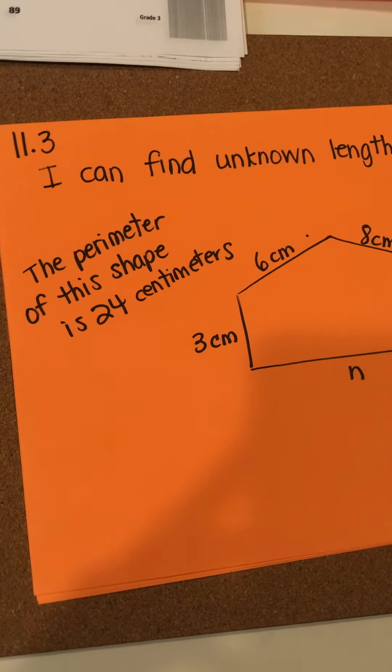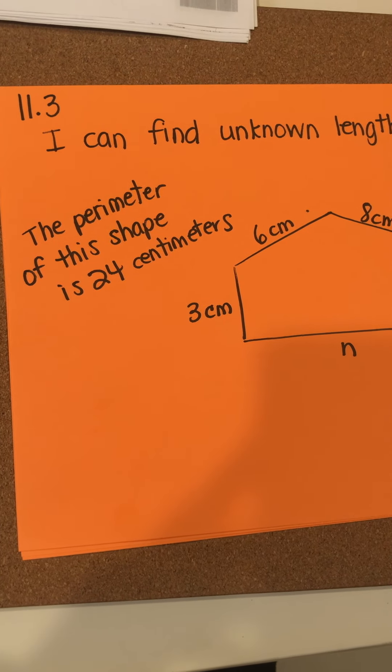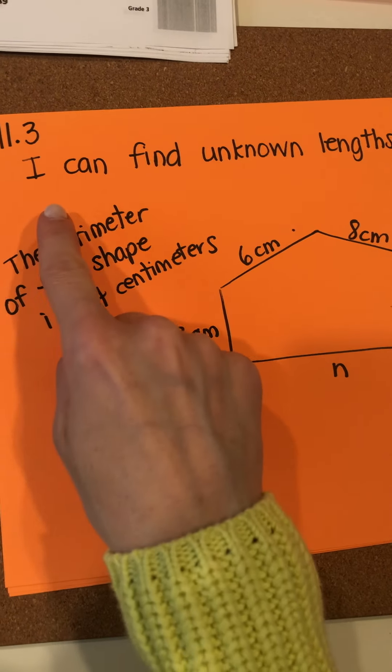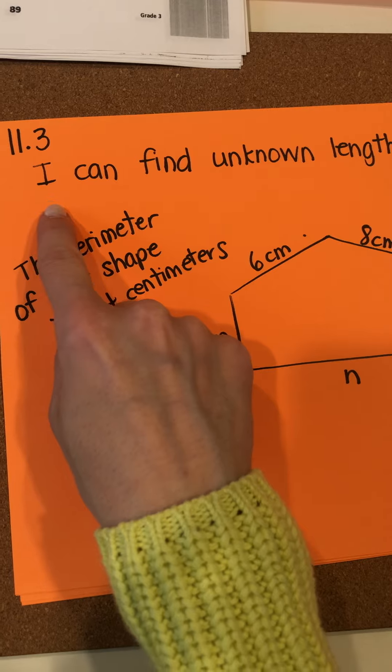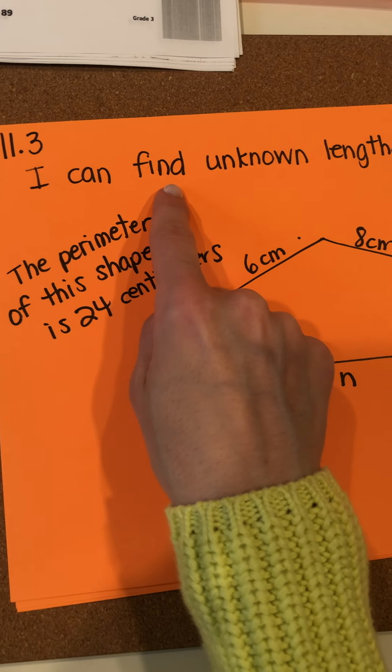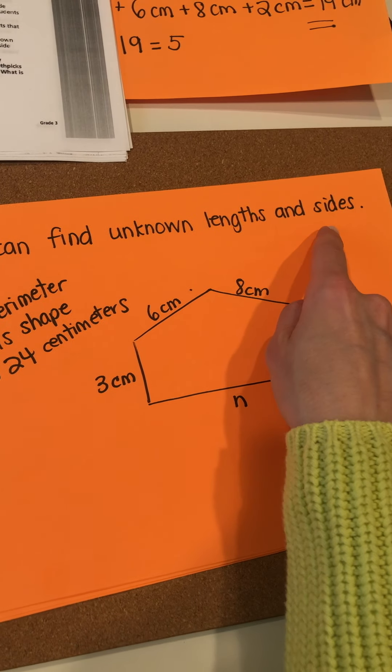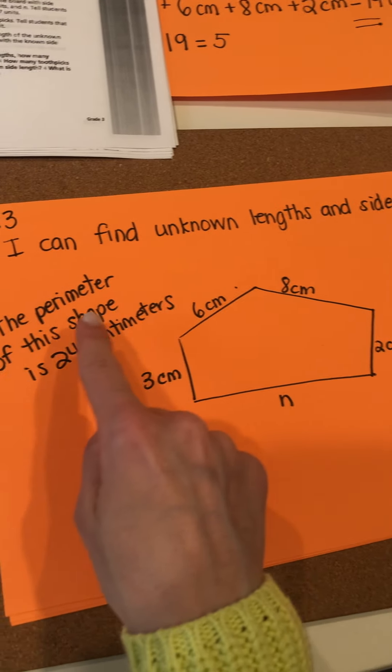So for today's lesson, 11.3, we're going to be able to say: I can find an unknown length and side.